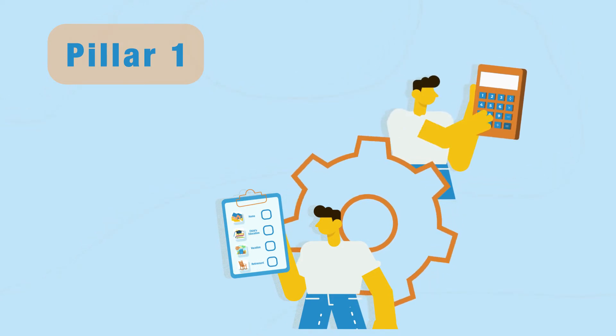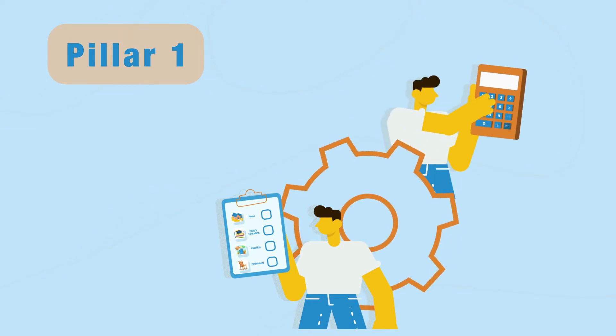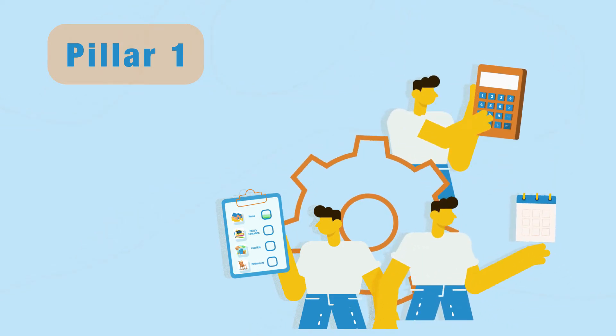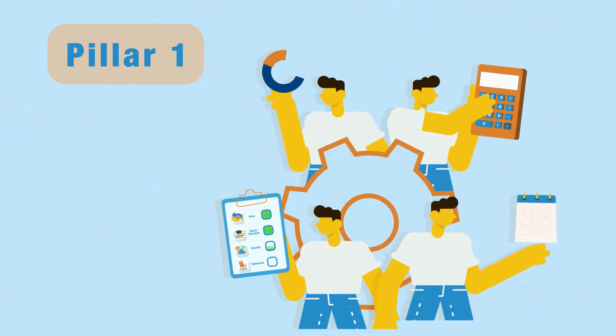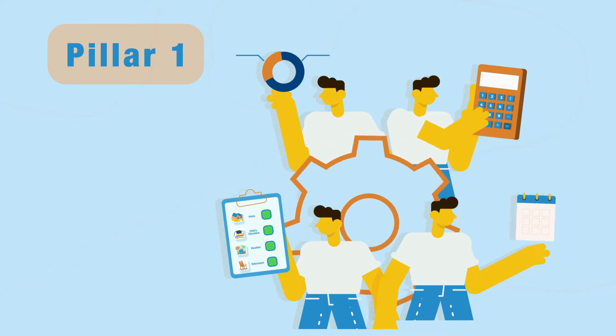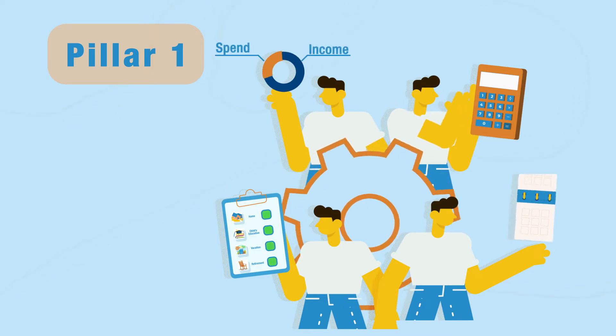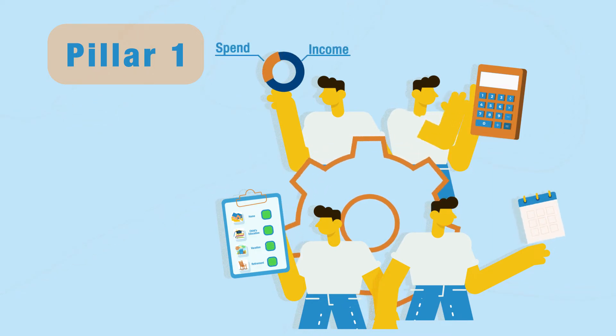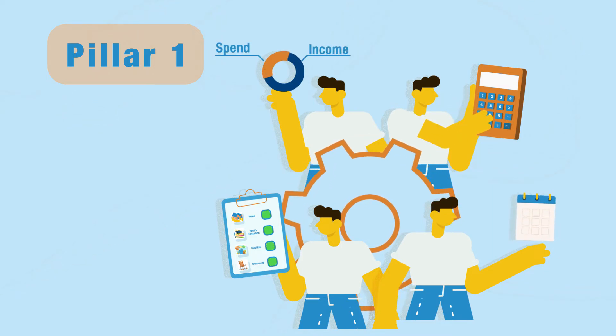Pillar one: identify your goals and know the amount you require to reach your goal. Be realistic about reaching this amount within a specific time period, based on your job income and spends.